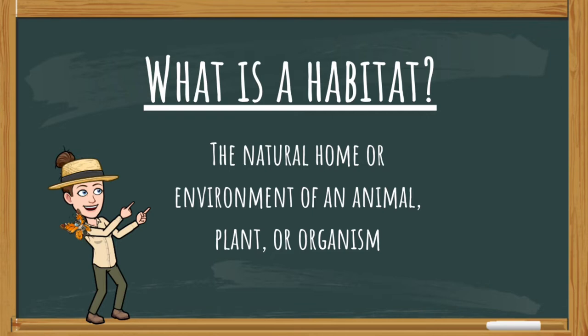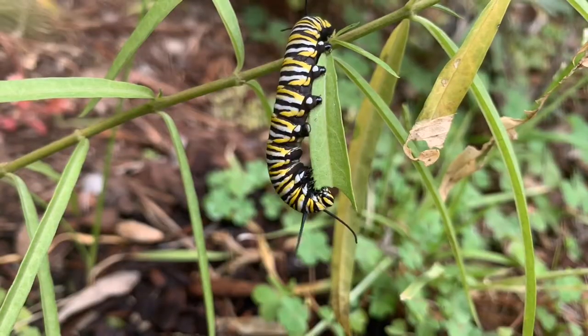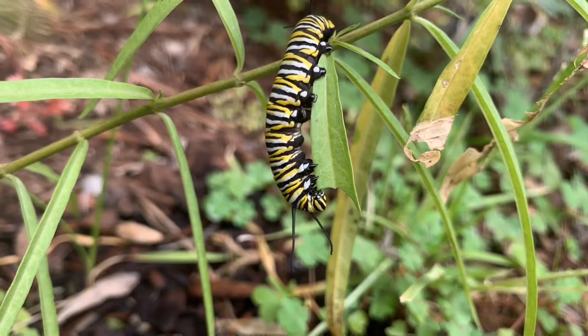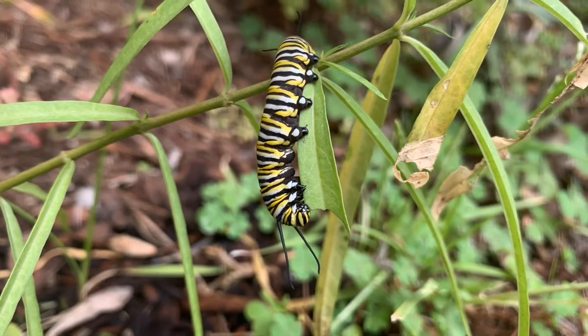Did you know monarch butterflies actually require two different habitats? These two habitats include overwintering habitats like the one Molly and I are filming from today, and also milkweed habitat locations which support the life cycle.